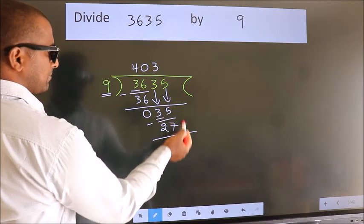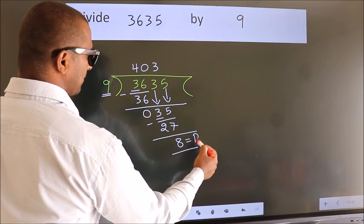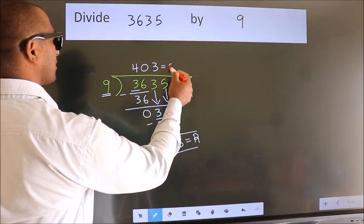No more numbers to bring it down. So we stop here. This is our remainder. This is our quotient.